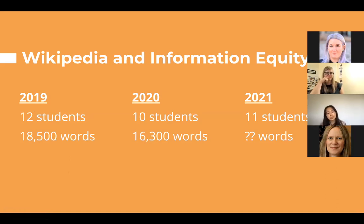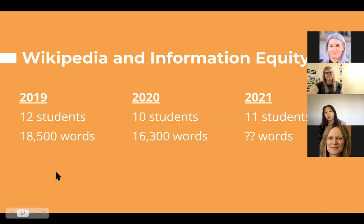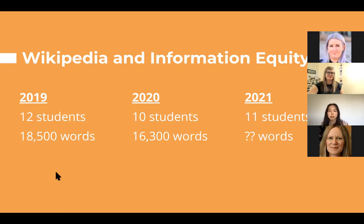These are our stats from the past three classes. In 2019, we had 12 students and about 18,500 words. In 2020, we had 10 students and about 16,300 words. This year we have 11 students and our word count is still yet to be determined, but we're very excited. These are words that would not have been in Wikipedia if not for their contributions. They have contributed to a landscape where thousands of other people are reading and accessing their contributions from around the world.